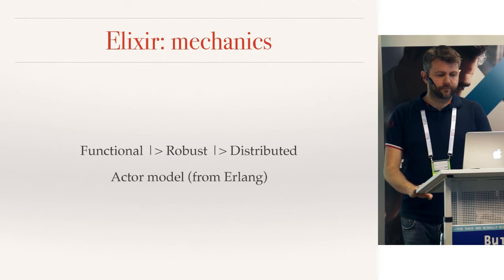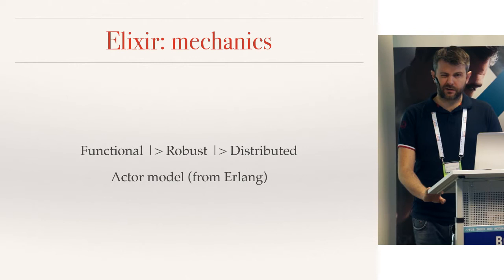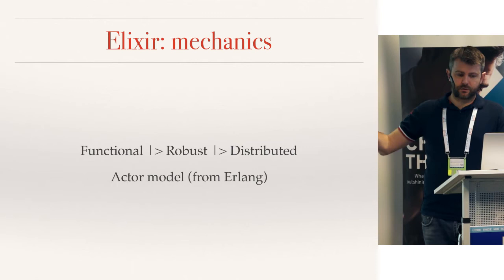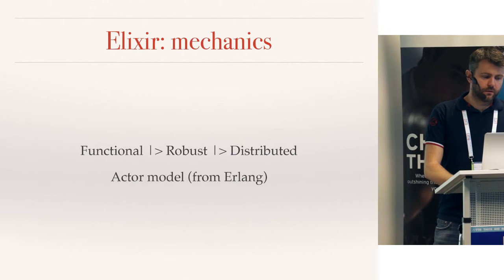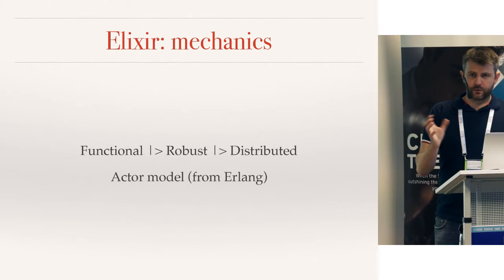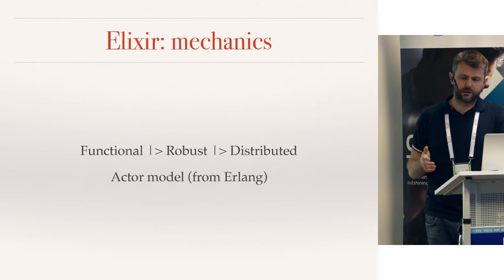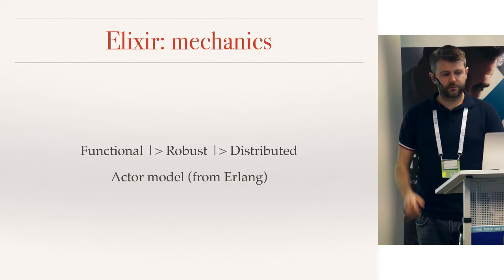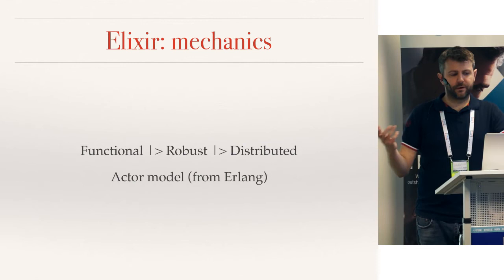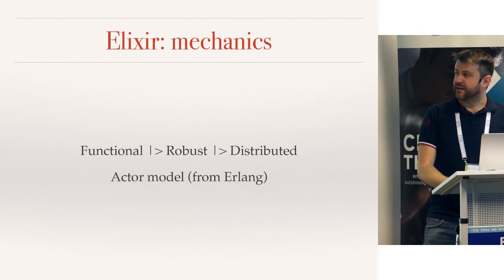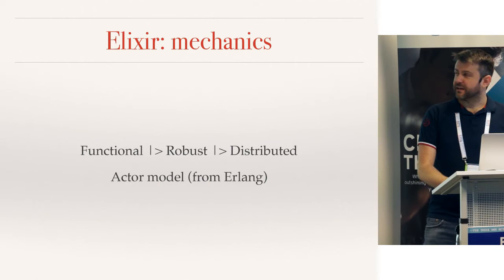The mechanics of the language: it's functional, robust, distributed, and built on top of the Erlang actor model. It looks a bit like Ruby because one of the core contributors, José Valim, also contributed a lot to Ruby — so the similarity is not by accident. Elixir has forward piping which makes the code very readable.